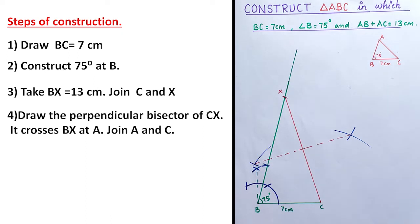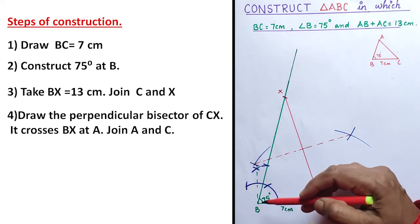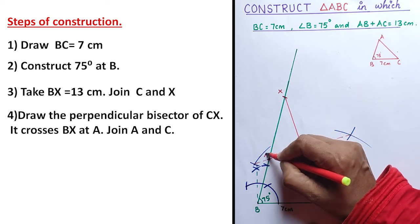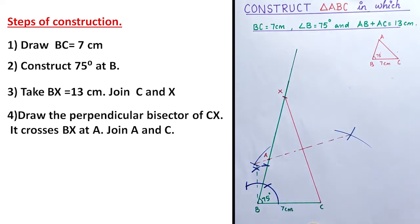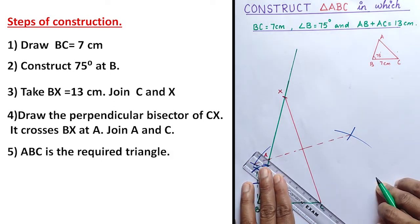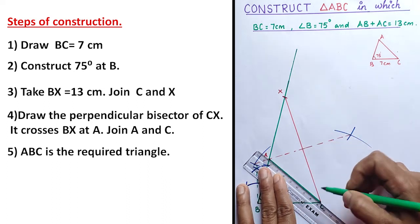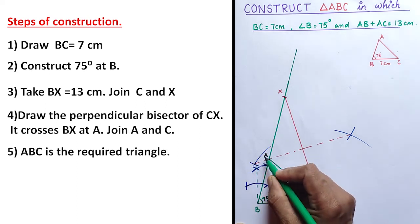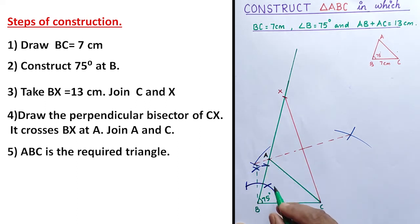Join these two intersecting points. This is the perpendicular bisector of CX. The bisector intersects BX at A — this point is A. Join A and C and we will get the required triangle ABC. This green colored triangle is the required triangle.